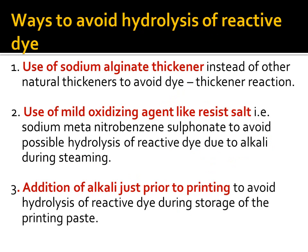There are three ways by which we can avoid hydrolysis of the reactive dye. The first is use of sodium alginate thickener instead of other natural thickeners to avoid dye-thickener reaction. Sodium alginate thickener is obtained from algae that grows on sea surface water. It is given treatment so that the hydroxyl groups in that thickener are blocked — replaced by ONa. That is why we can avoid reactive dye and thickener reaction by replacing starch paste or gum thickeners with sodium alginate.